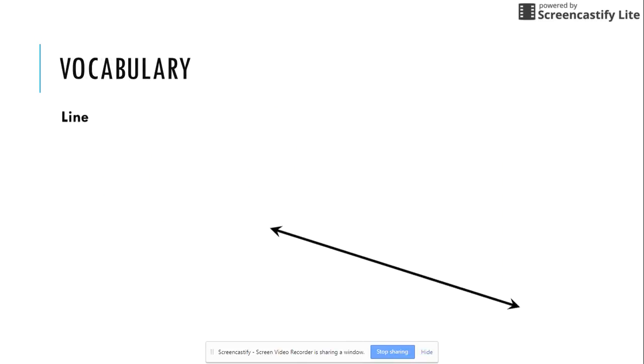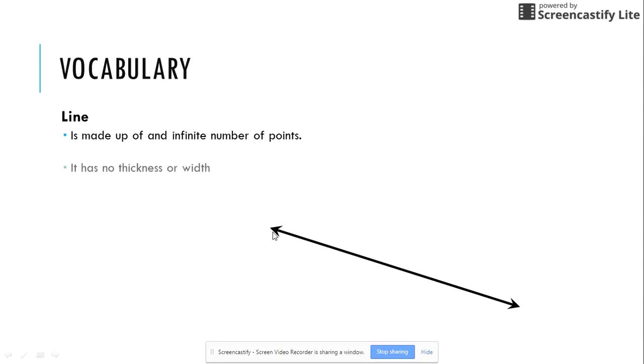Another vocabulary term that we are going to be talking about is a line. Now again if I asked you to draw a line in your notebook you could all draw a line. If I asked you for an example of a line you could give me an example of a line. A line is made up of an infinite number of points. It has no beginning and no end which is why we have these arrows on either side. It also has no thickness or width. Now I can draw a thick line and I can draw a thin line but technically I cannot measure them. Again, that is what makes it an undefined term because I can only define it by drawing a picture.